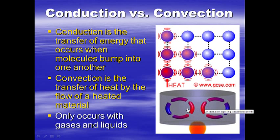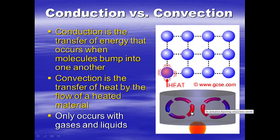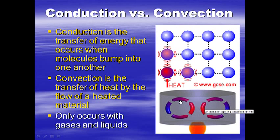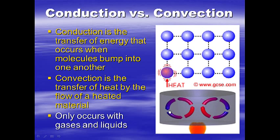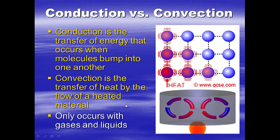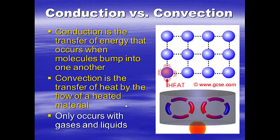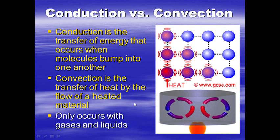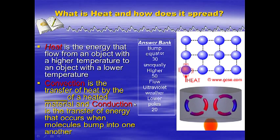When you heat water up, the hot molecules begin to move faster and spread out, becoming less dense, so the hot stuff rises. Then it cools as it rises and gets farther from the heat source — the molecules move closer together, becoming more dense, and they sink. This is called a convection current. Convection occurs with gases and liquids because these states of matter can flow. Our atmosphere is a gas, so our atmosphere moves heat by convection.